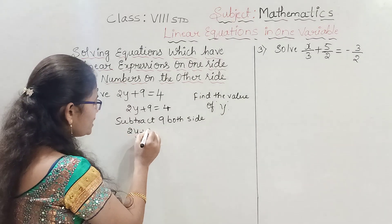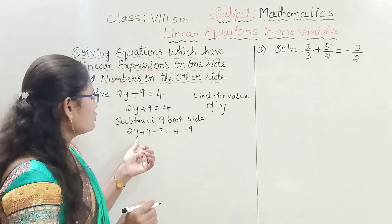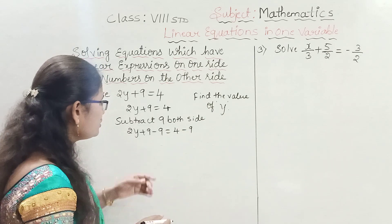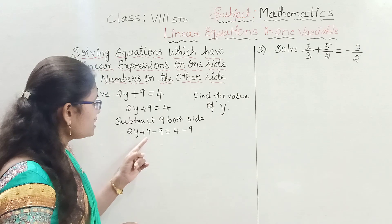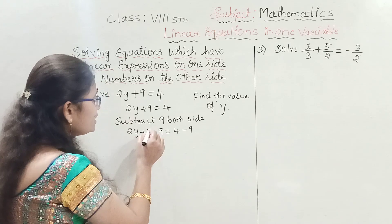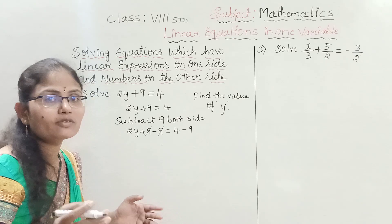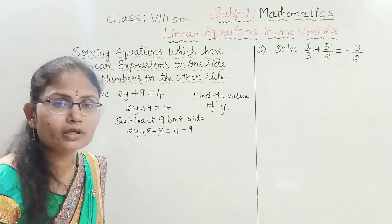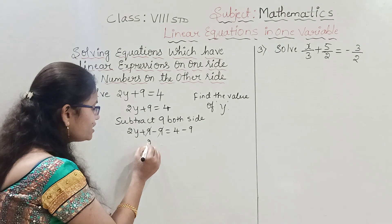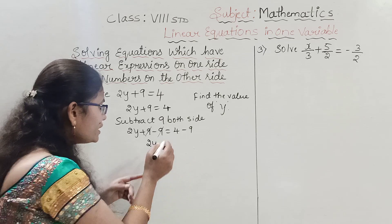So: 2y plus 9 minus 9 equals 4 minus 9. Plus 9 and minus 9 cancel because 9 minus 9 equals 0. What remains on the LHS is 2y, equals 4 minus 9.